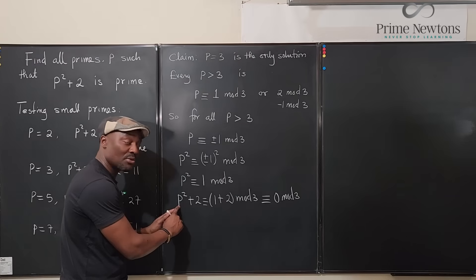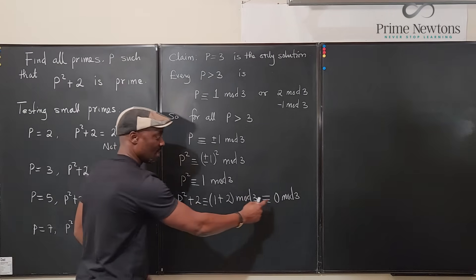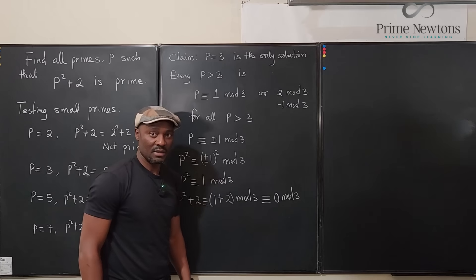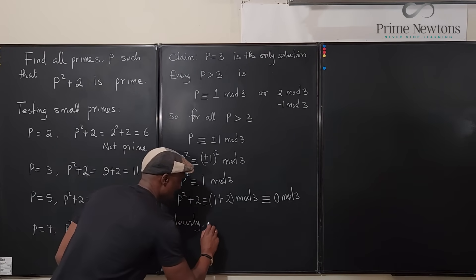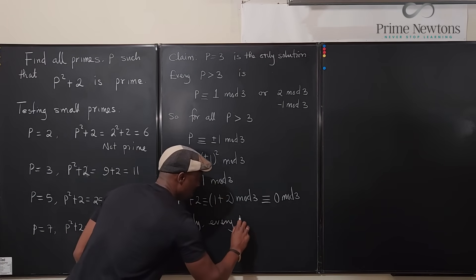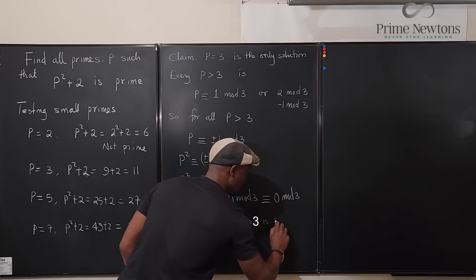Remember, it is 0 mod 3 if it is divisible by 3. And that's it. So anytime you take a prime number greater than 3 and you square it and you add 2, the number is going to be divisible by 3.